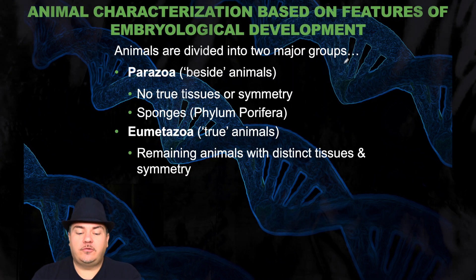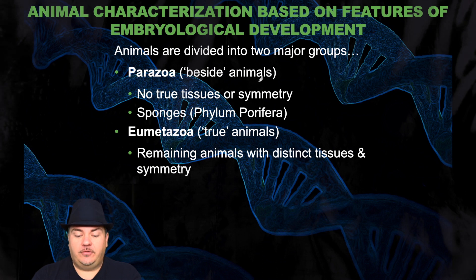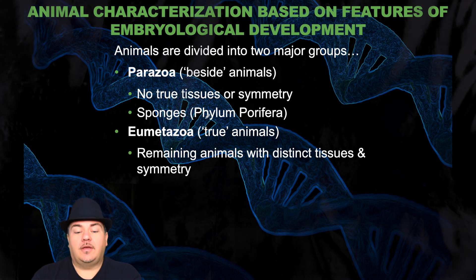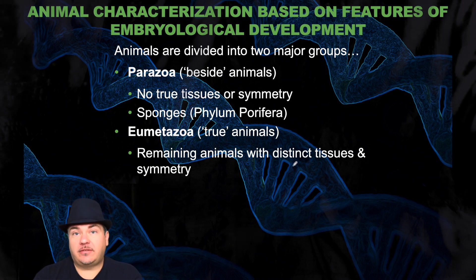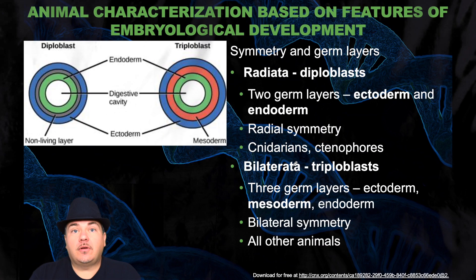Animals are divided into two major groups. The Parazoa, which means beside animals — they have no true tissues or symmetry. Examples of this are sponges, which are in the phylum Porifera. Then you have the Eumetazoa, which are the true animals — the remaining animals with distinct tissues and symmetry. So let's talk about these germ layers, the different layers of cells.